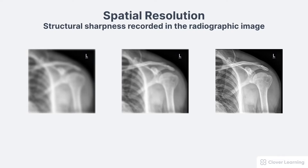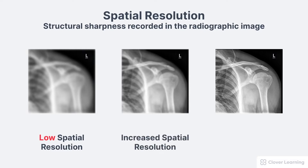Each of these images has a different level of spatial resolution. The first image is very blurry — the edges are not sharp at all, which is the same as having low spatial resolution. The second image has less blur, or increased spatial resolution, and the last image has the highest spatial resolution. There is no blur and the edges of anatomic structures are very clear.